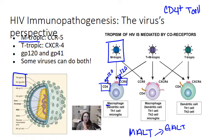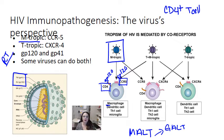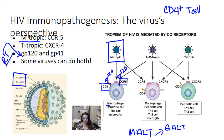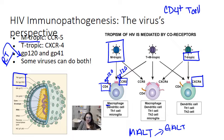GP120 binds to both CCR5 and CD4 — CD4 is the receptor and CCR5 is the co-receptor. It's considered M-tropic because it's probably going into macrophages initially, which are plentiful in mucosal sites. As the virus replicates, it comes under pressure from the immune response, from antiretroviral therapy if initiated, and also from mutations introduced by the error-prone reverse transcriptase. Mutations in GP120 can change an M-tropic virus to a T-tropic virus, which is capable of binding CXCR4.